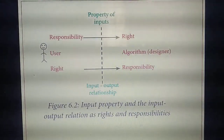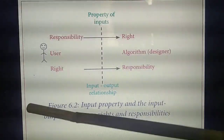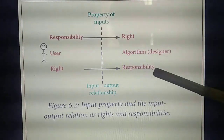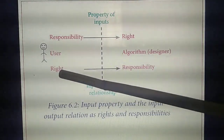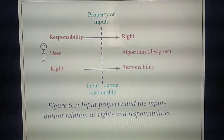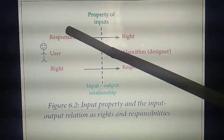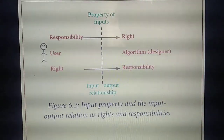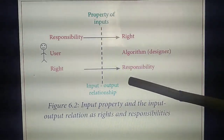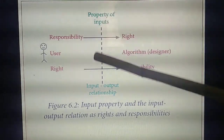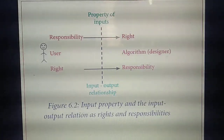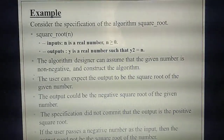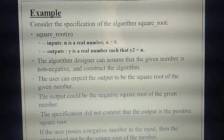The same things are given in a diagram form. This is the user — using the tailor example, you are the person, the tailor is the designer. The user has rights and responsibility to give inputs — correct measurements and designs. The designer has rights and responsibility to satisfy your requirements. The property of input and the input-output relation are shown in the diagram. The same specification contract is applied to the square root problem.